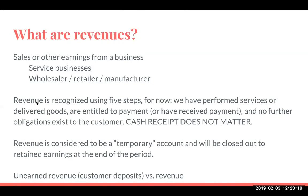So when we have revenue, what exactly is it? Technically, revenue is recognized using five different steps — but I don't want to overwhelm you with those. The way I want you to think about it is that as a company, we either perform services or deliver goods. We're either entitled to payment or we receive payment and we have no further obligations to our customer. We've done everything we need to do in order to recognize that revenue — it's a sale. What is very important is that it does not matter if we have received the cash or not. The biggest driver is whether we've done the work and are entitled to payment. Revenues are also considered to be temporary accounts — they show what we've generated over a period of time.